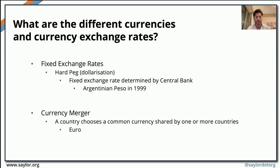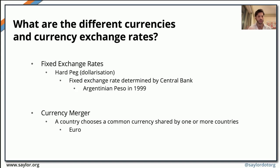When talking about fixed exchange rates, there is also the hard peg, or dollarization, where the central government determines the value of the national currency — think of the Argentinian peso in 1999 or the Lebanese lira pre-2019. A currency merger, on the other hand, is when a country joins one or more other countries in the use of one common currency, such as the euro.